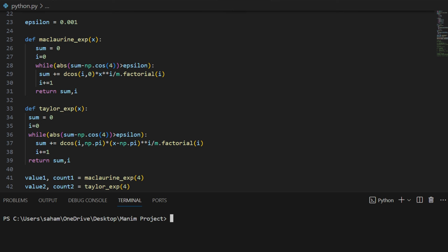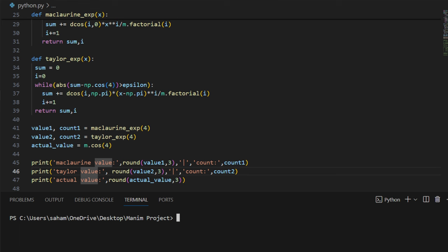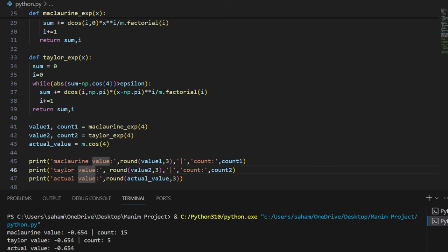Let's put this concept into practice. We will store the results from Maclaurin and Taylor series in variables 1 and 2 respectively, and record the number of iterations in count 1 and 2. When executing the program, we observe that Maclaurin series takes 50 iterations to approximate the value, whereas Taylor series accomplishes the same task in only 5 iterations.